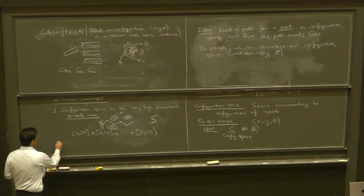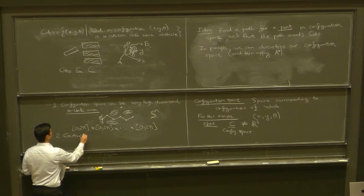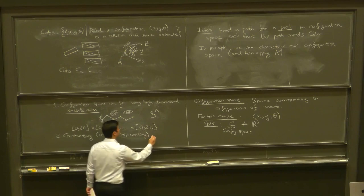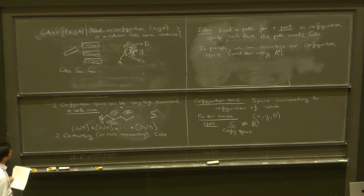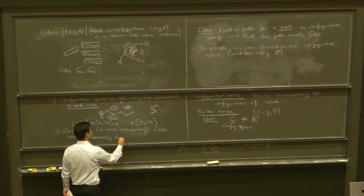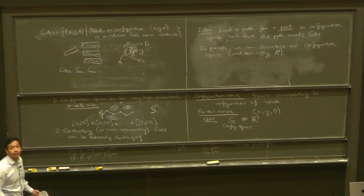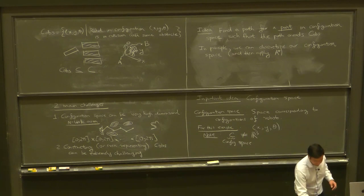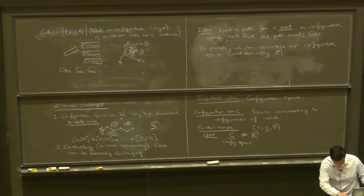The second challenge is that constructing — or even computationally representing — the subset of configurations in your configuration space that result in a collision can be extremely challenging. It's not even clear what kind of representation you should use to describe C_obs, and I'm going to show you some pretty cool visualizations of this. The robot in the visualization is just a triangle — again, a three-degree-of-freedom system.